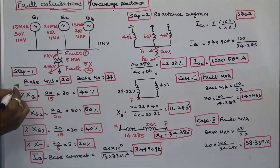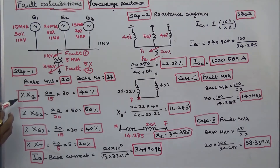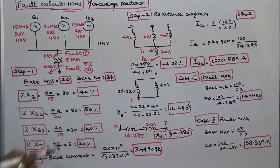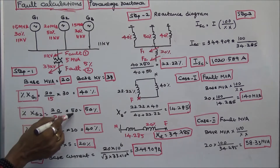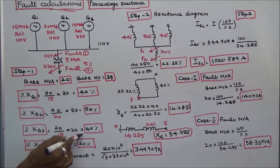Next, we calculate the percentage reactance of the generators and the transformer. %XG1 is equal to (20/15) × 30, which equals 40%. %XG2 is equal to (20/20) × 50, which equals 50%. %XG3 is equal to (20/15) × 30, which equals 40%.